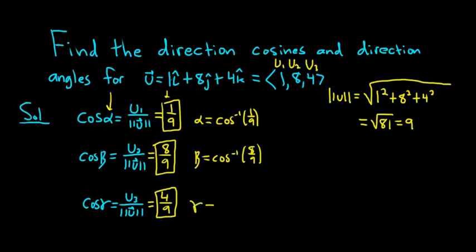The second one will be cosine inverse of 8/9. And the last one, gamma, will be cosine inverse of 4/9. So I'm going to work all of these out and come up with some approximations. Cosine inverse of 1/9, I got 1.459. So approximately 1.459.